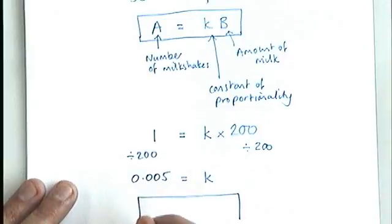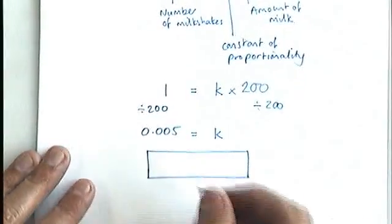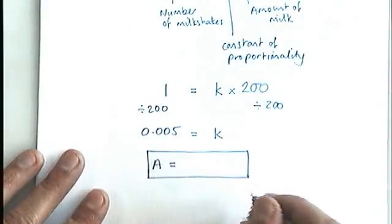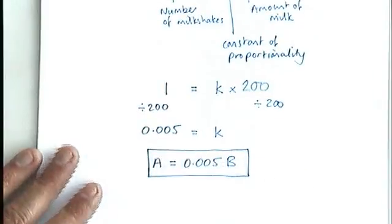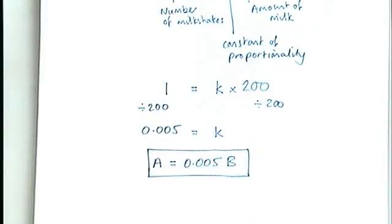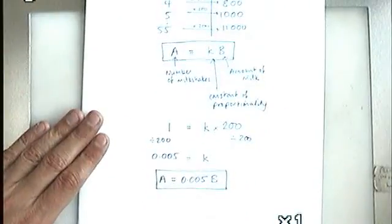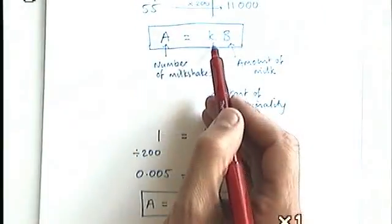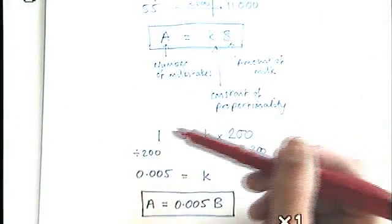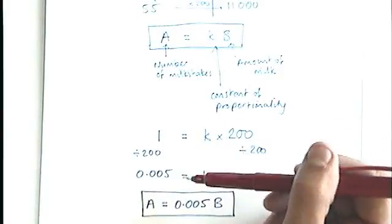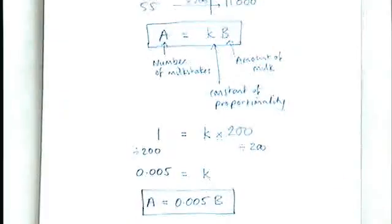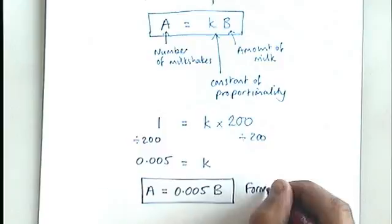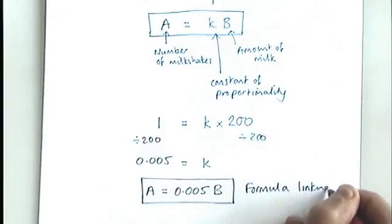So the key thing here now is that we've got a formula. We've got a formula where we know that A stands for the number of milkshakes, K is this number here, and B stands for the number of milliliters of milk that we will require. So if you look at the process I've gone through there, I've started out with a formula with a K in it, but I've substituted in values of A and B, and then I've worked out my value of K and I've re-substituted that back into my original equation. So now I have got a complete formula linking A and B.